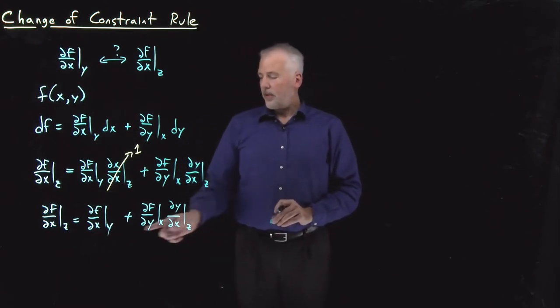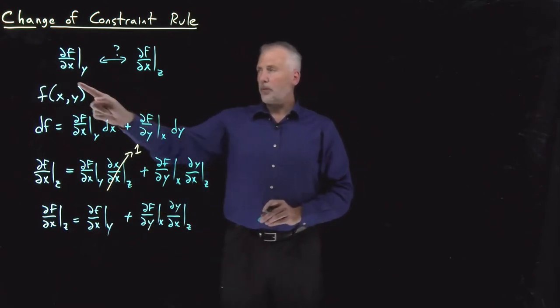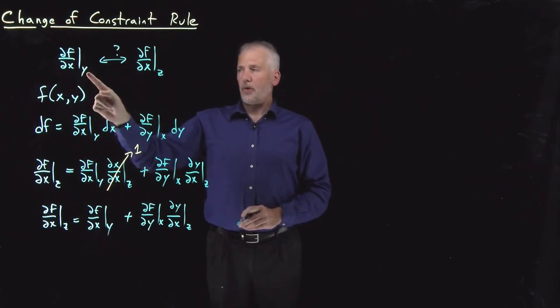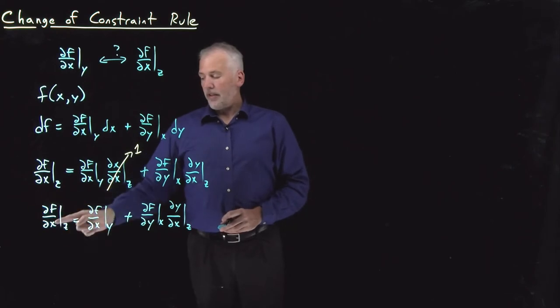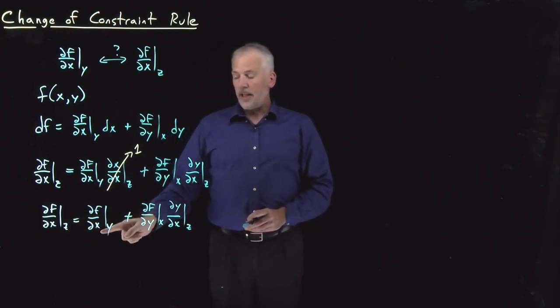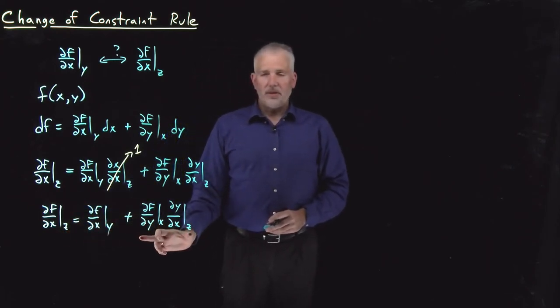This now is exactly the thing we were looking for. What's the relationship between a particular derivative at constant y and the same derivative at constant z? That's exactly what we have here. ∂f/∂x at constant z is equal to ∂f/∂x at constant y, plus this extra term.